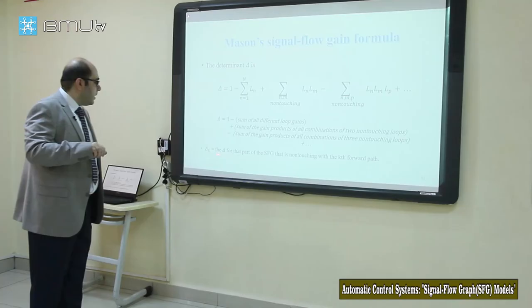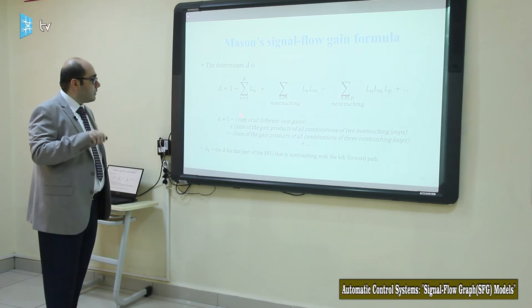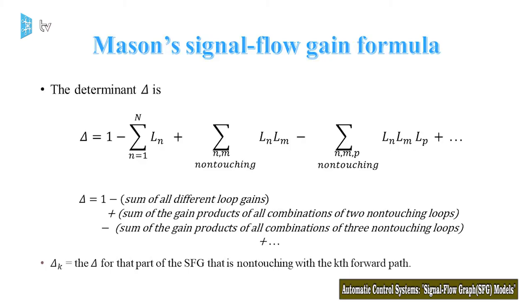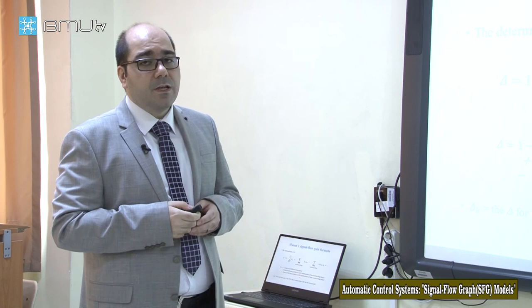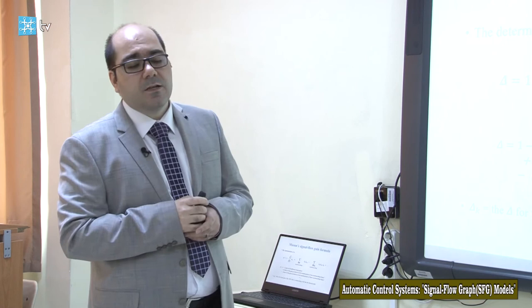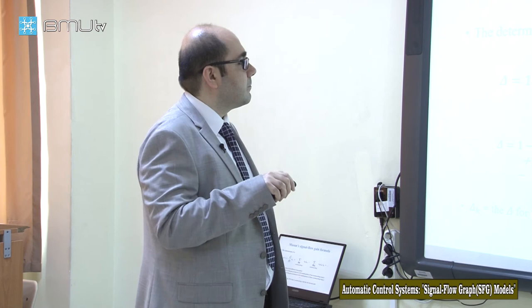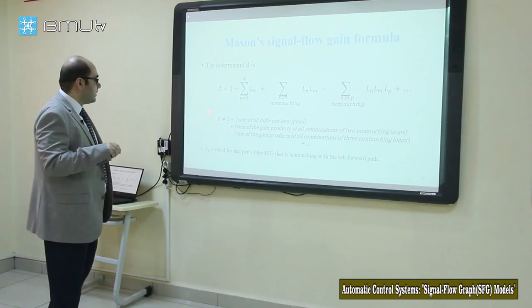Delta_k is the same determinant formula applied to the part of the SFG that is non-touching with the kth forward path. First we determine the kth forward path, then for the remaining section of the signal flow graph we calculate this delta — that is called delta_k.